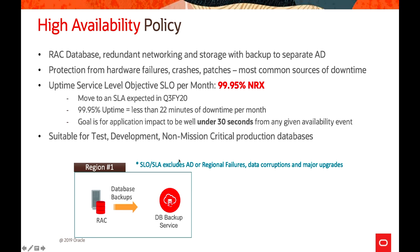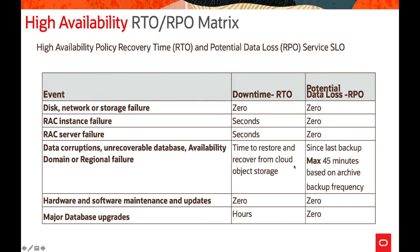In terms of RTO and RPO metrics, for high availability: for network or storage failure, the RTO is zero because there is no single point of failure, and potential data loss is zero. For RAC instance failures, recovery is within seconds with zero data loss, since RAC is active-active. For RAC server failures, recovery is also in seconds with zero data loss.